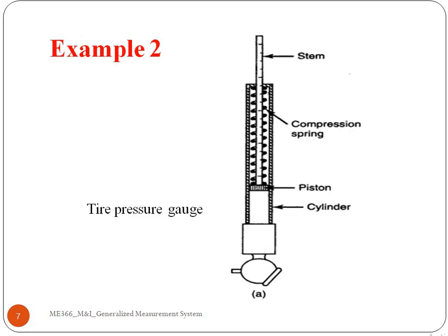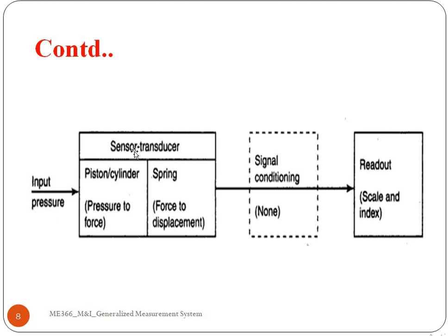Another example is the tire pressure gauge. In this figure, the pressure is converted into displacement and the stem or indicator indicates the pressure inside the tire. The piston converts the pressure into force and the spring converts the force into displacement — this is the sensing and variable conversion step. A small displacement can be displayed with the help of a scale or indexing, with no additional signal conditioning needed. The readout can be a scale and pointer, or a digital display unit.